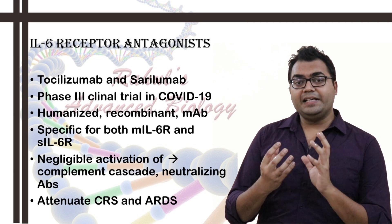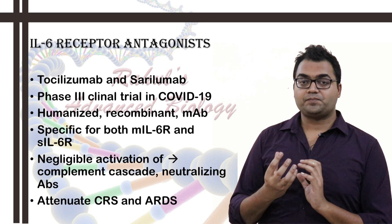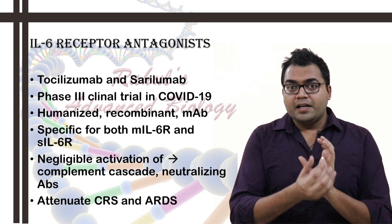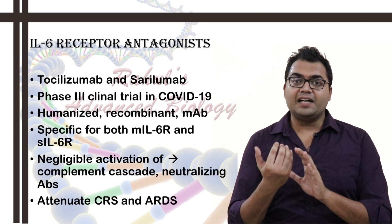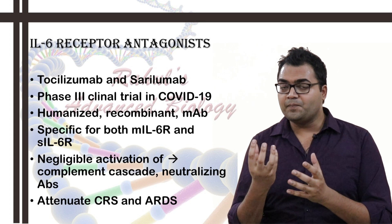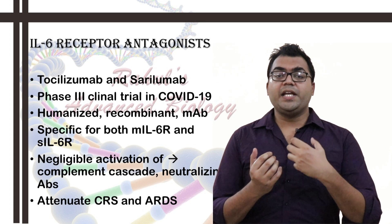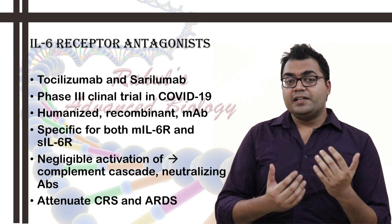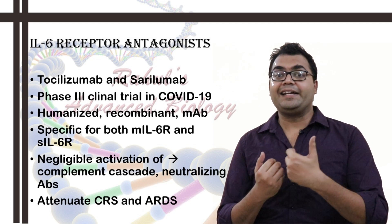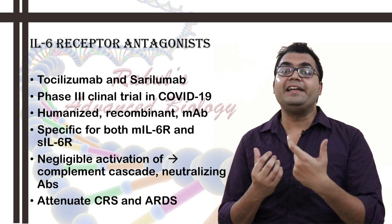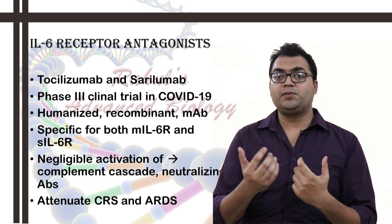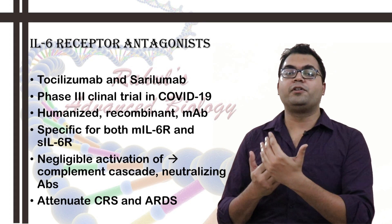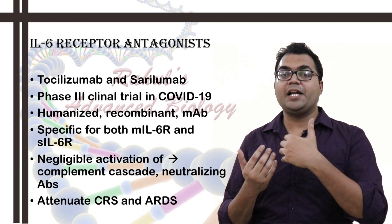In the mouse model, what they did was specifically take the humanized antibody against IL-6R from the mouse. How? The mouse was immunized with the human IL-6 receptor (IL-6R) to generate a monoclonal antibody like sarilumab in the mouse, which would be humanized in nature. This was how it was generated, and thus it doesn't really induce the complement pathway or a neutralizing antibody response when administered in the human body.